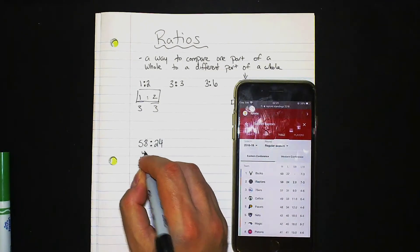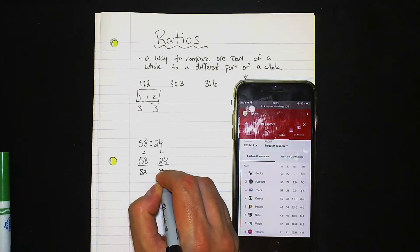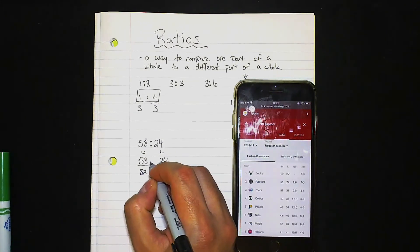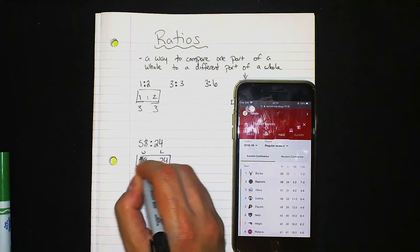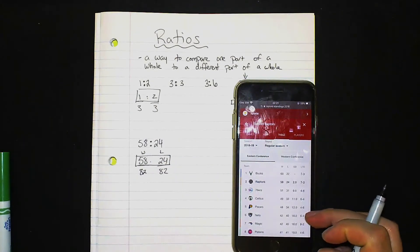That's how many games are in a basketball season. So they won 58 of 82. So these are the wins. And the losses are 24 of 82. But really we are comparing this here. That's what you see with ratios.